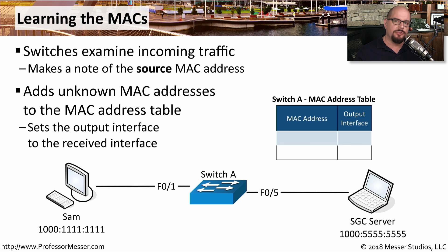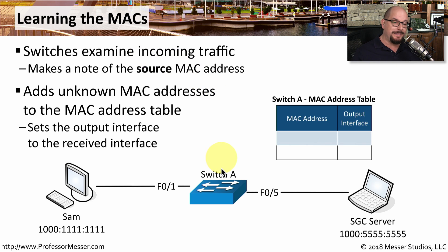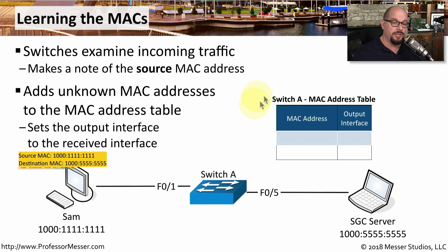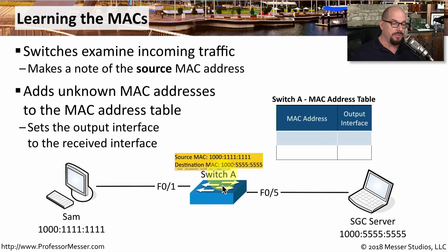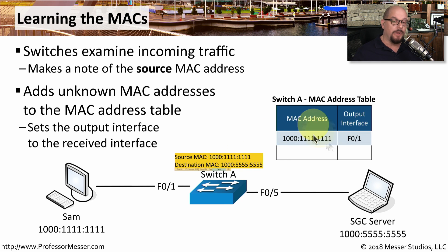Being able to build this table of MAC addresses and interface names is an important function for any switch. The switch constantly examines incoming information and makes a note of the source MAC address associated with that traffic, filling in the MAC address table. So if Sam is going to send information to the SGC server — let's say we just turned on this switch and there's no information currently in the MAC address table — when Sam sends that information to the switch, the switch looks at the source MAC address, which is 1000-1111-1111, and recognizes it doesn't currently have that address in its table. So it will add that address and put the output interface of fast ethernet 0/1, because that was the interface where it received that particular frame.